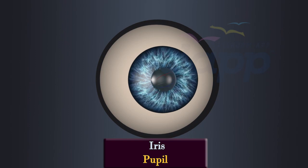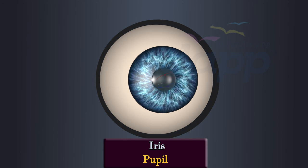Light will reach the iris by passing through the aqueous humor. There is a dark circular opening in the center of the iris called the pupil. Muscles in the iris control the size of the pupil. In bright light, the iris contracts, making the pupil smaller to reduce the amount of light entering the eye.